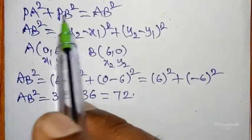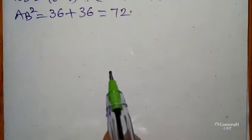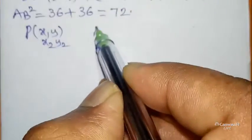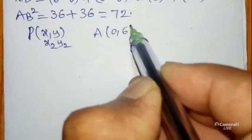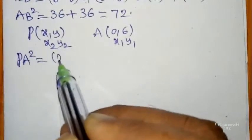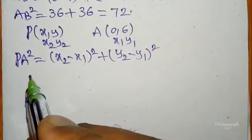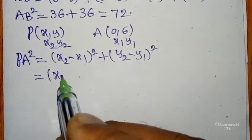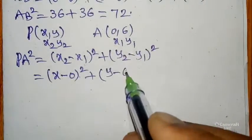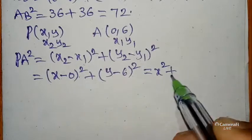Next, I will find PA² individually. P is (x, y) — let it be (x₂, y₂) — and A is (0, 6) — let it be (x₁, y₁). Using the distance formula: PA² = (x − 0)² + (y − 6)².